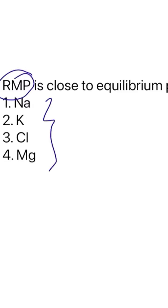For determining the value of resting membrane potential, we use the GHK equation, that is Goldman-Hodgkin-Katz equation. This equation includes many ions.